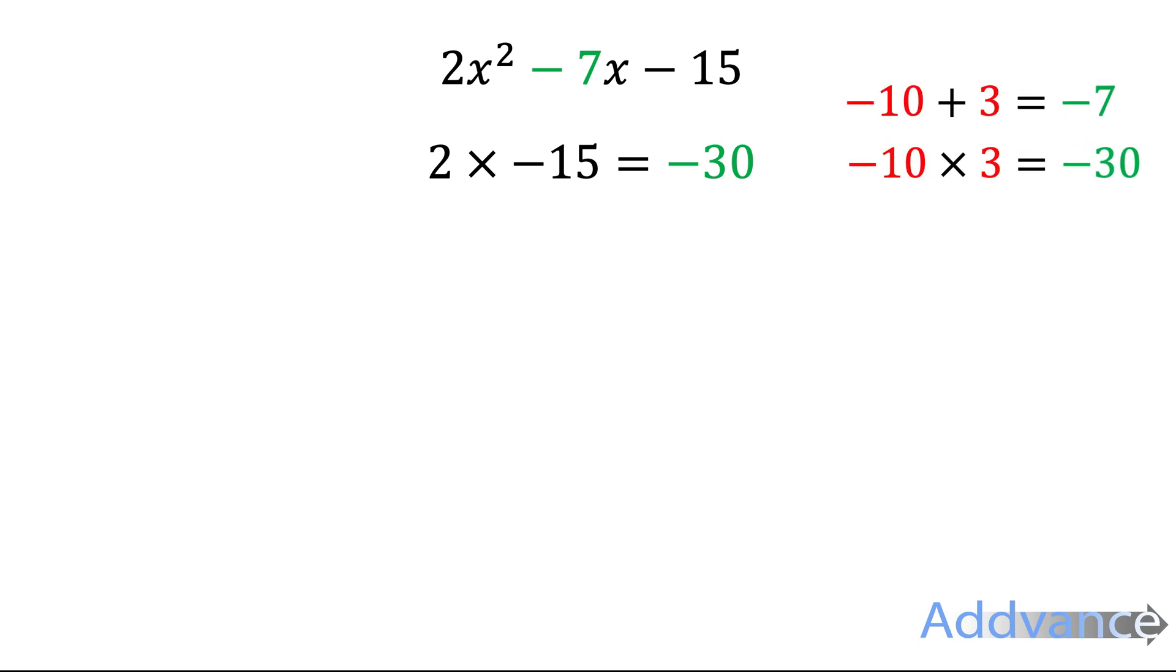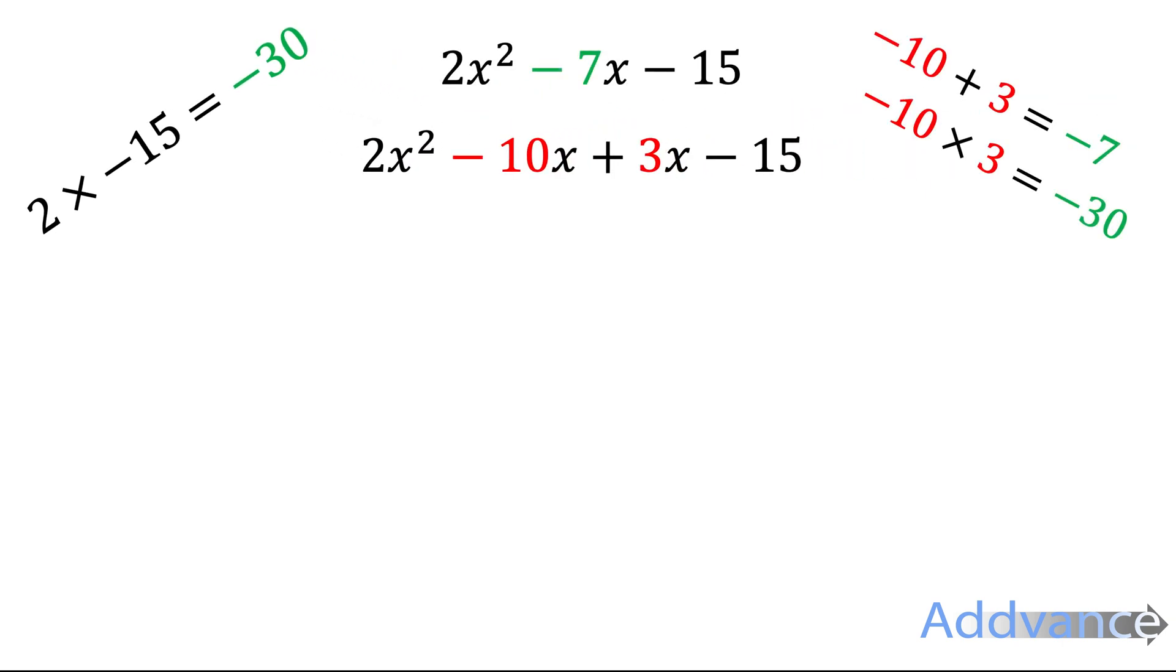You should find minus 2 and 3 add to make minus 7 and multiply to make minus 30. It's up to you to find those two red numbers there. If you're struggling, try writing out all the numbers that multiply to make minus 30.